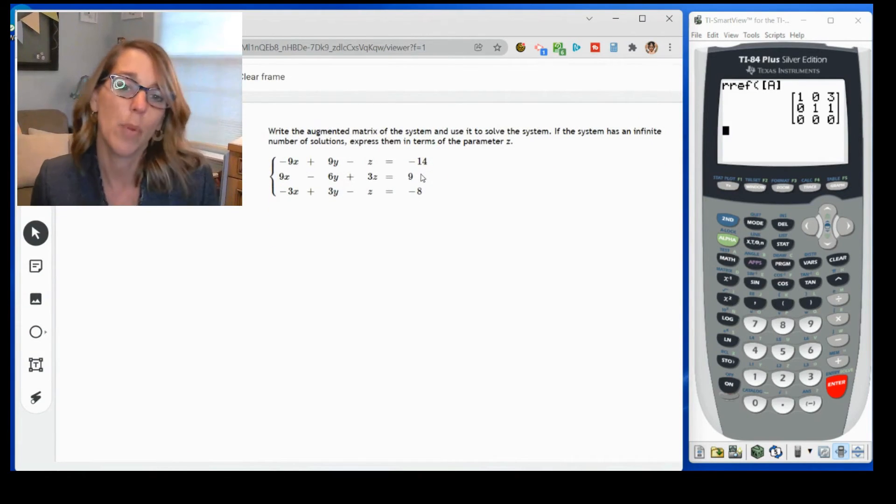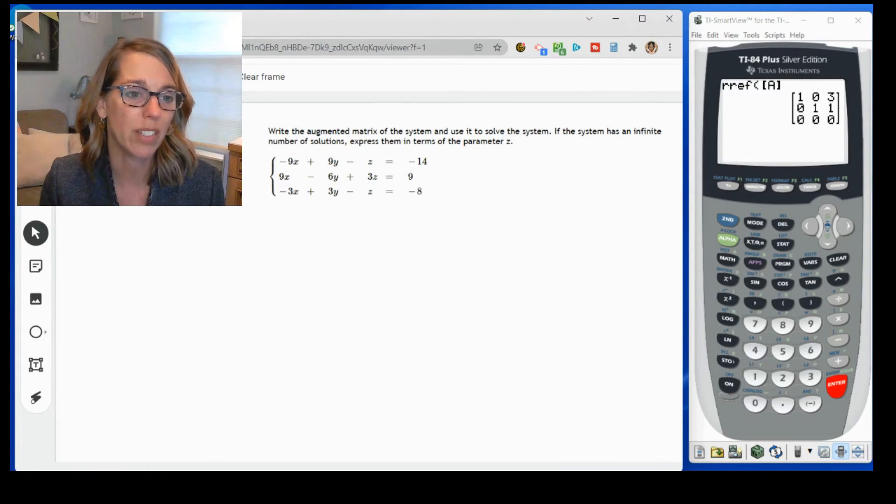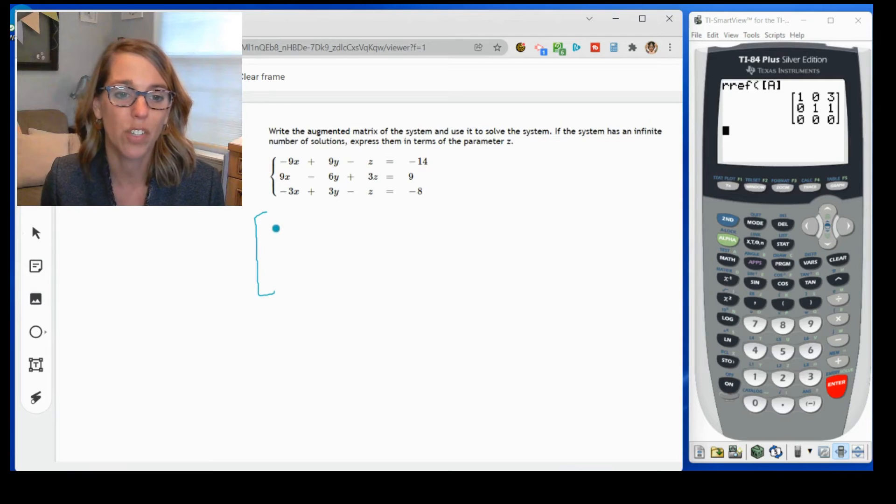And in this next one, we want to come up with the augmented matrix. So we're going to go ahead and put the coefficients into a matrix, and then solve the system using reduced row echelon form. So as I put this into my matrix, let me just grab my pen. My matrix is just going to consist of those coefficients.